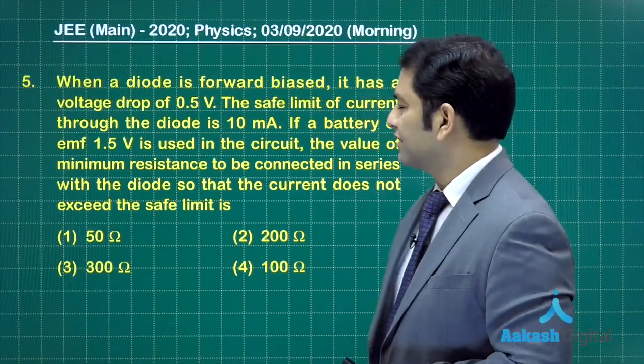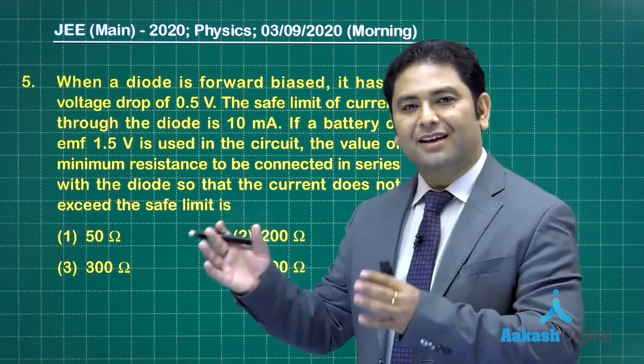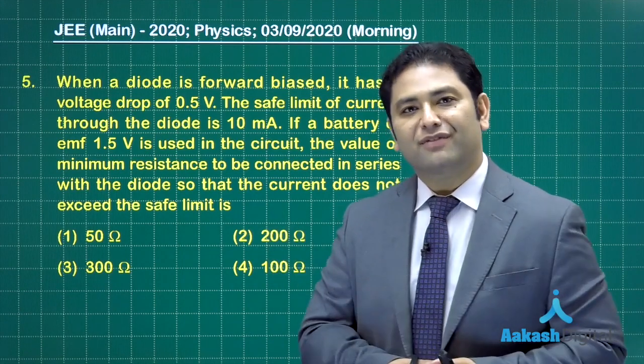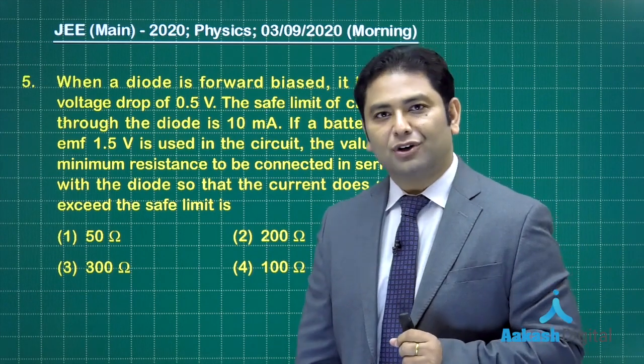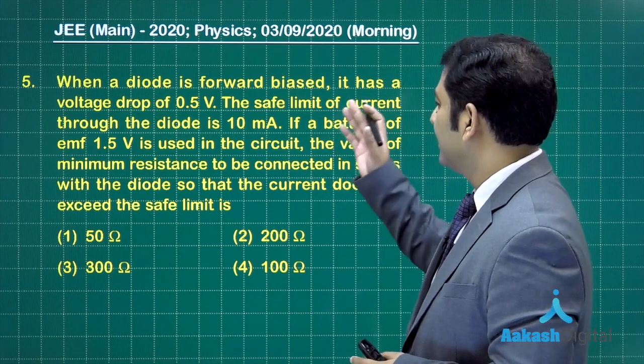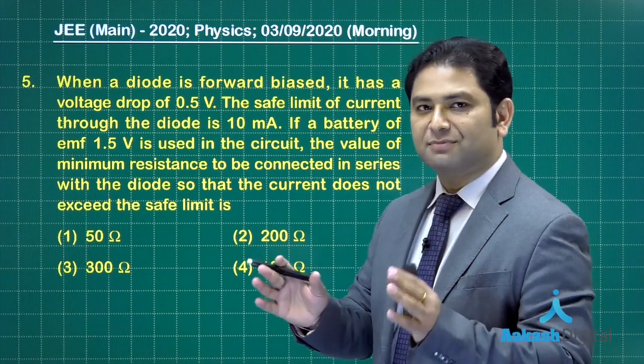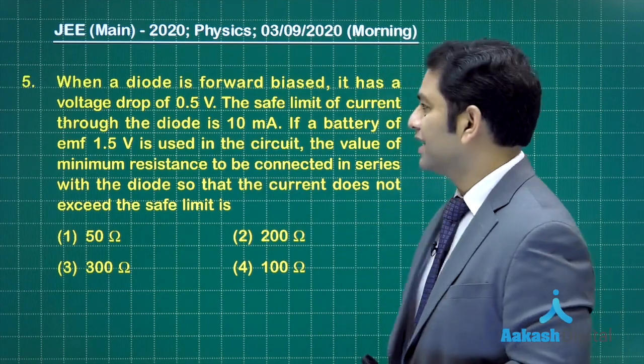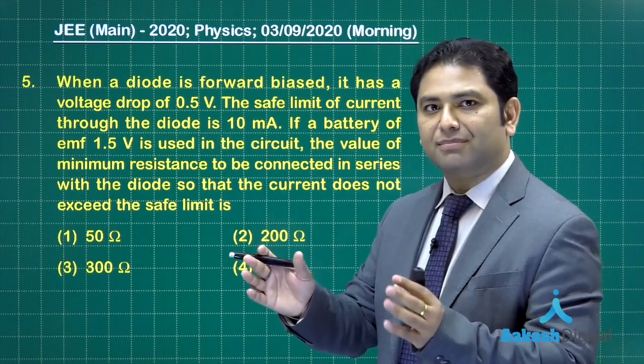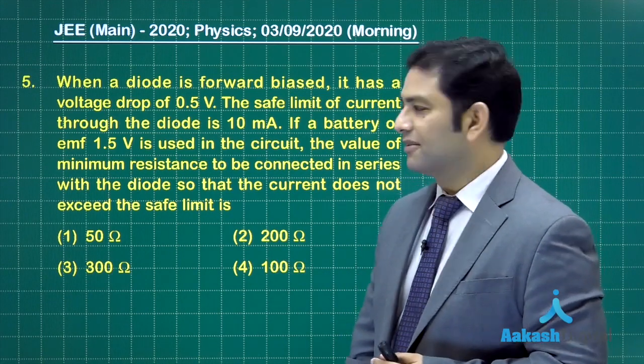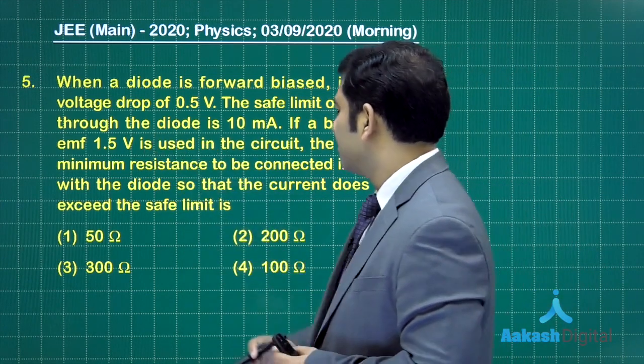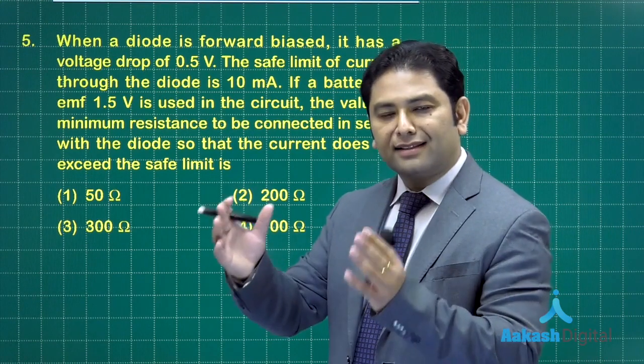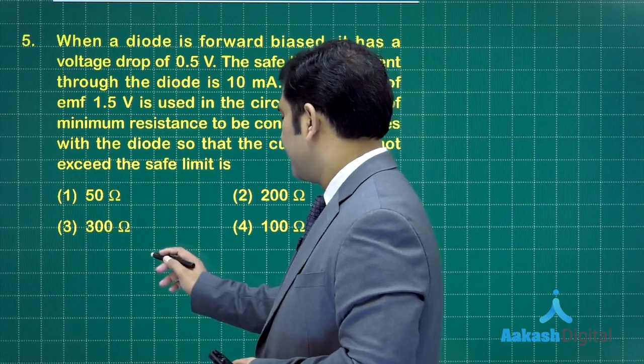Let's go for the next fifth question. Here is the fifth question on semiconductors. What I regularly say even during my analysis session is that certain topics which are there only in JEE Mains are one of the very favorite topics for this examination. That's a diode in the forward bias condition. There is a voltage drop of 0.5 volt. The safe limit of current is 10 milliampere, meaning the current through the diode should not exceed 10 milliampere. Then if a battery of 1.5 volt is used, we need to calculate the minimum value of resistance in series so that the diode will get the current within the permissible limit.